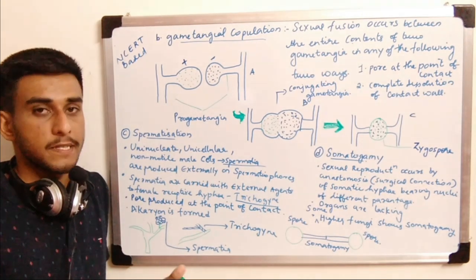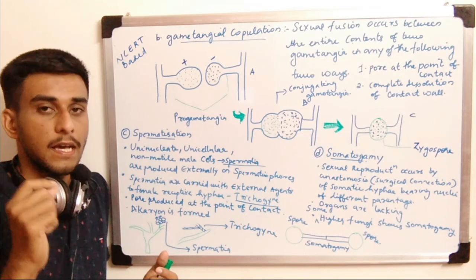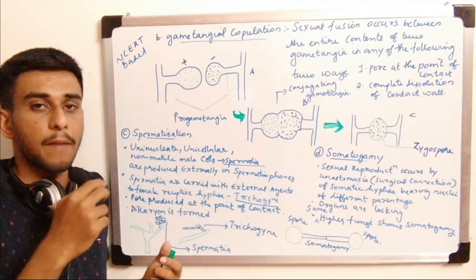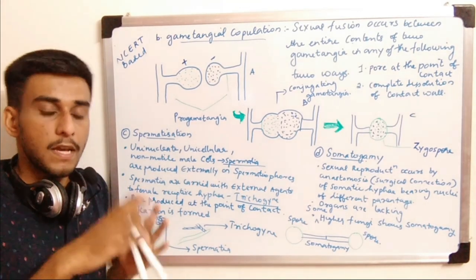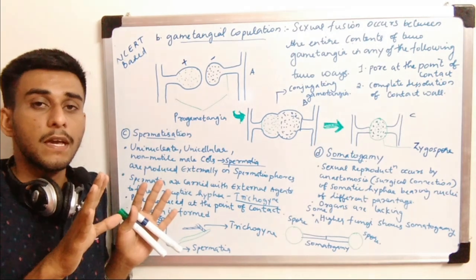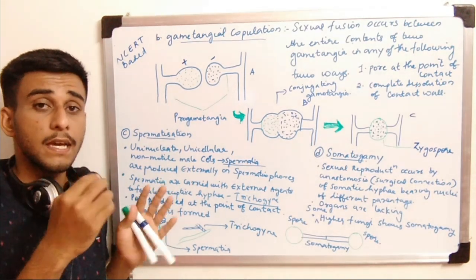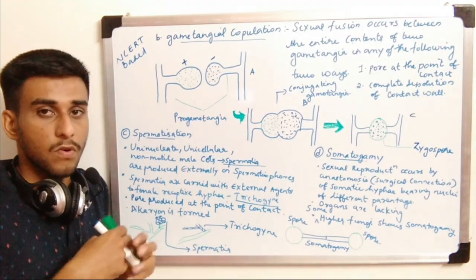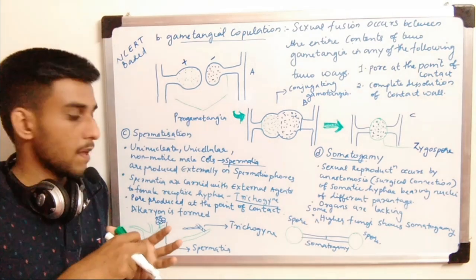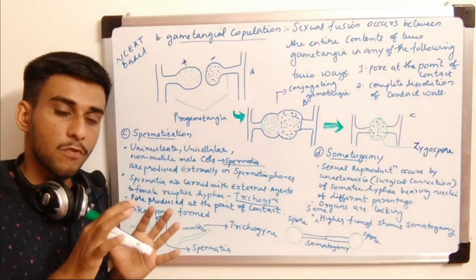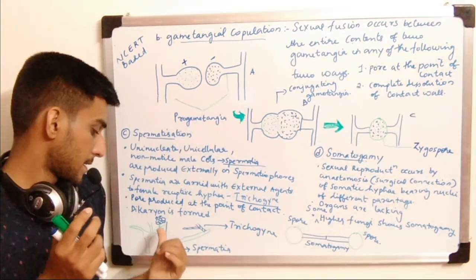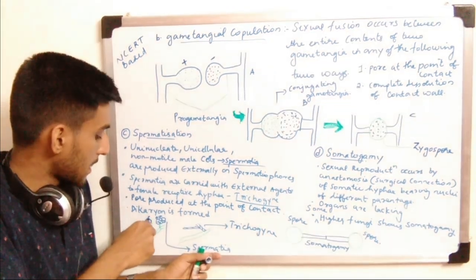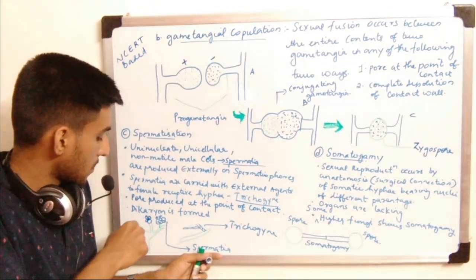Spermatia are uninucleate — single-celled — and non-motile gametes. Non-motile means they do not have any flagella. They can only be propelled by external agents like water currents or air currents.